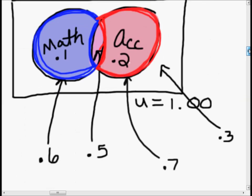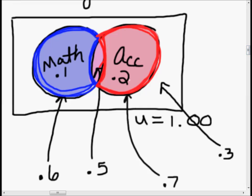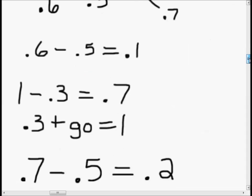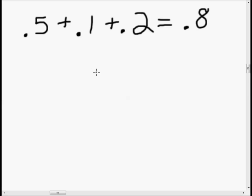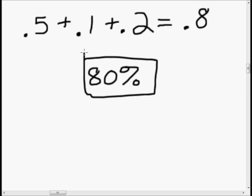Now all we have to do is add these values together. We add the math-only bit (0.1), plus the accounting-only bit (0.2), plus the center bit — the chance she went to both (0.5). That is 0.5 plus 0.1 plus 0.2, which equals 0.8, or an 80% chance that she went to at least one class on Monday. That is our answer.